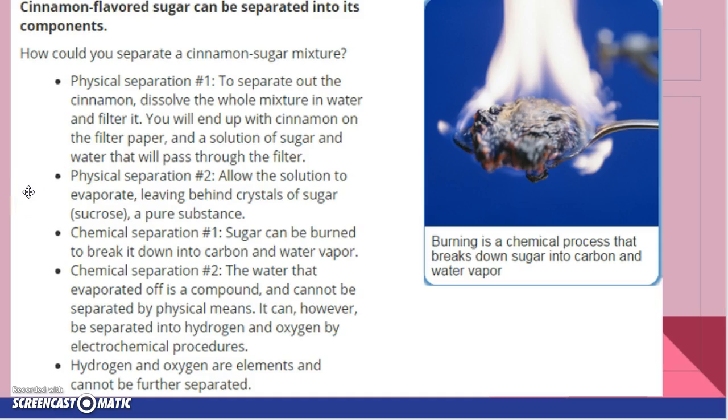Then you can get rid of the water by evaporating it, which would leave the sugar behind. Now you can actually burn sugar to make it into carbon and water vapor. The water that evaporated off is a compound and cannot be separated by physical means. But if we did that special electrochemical process, electrolysis, we could separate it into the two elements of hydrogen and oxygen.